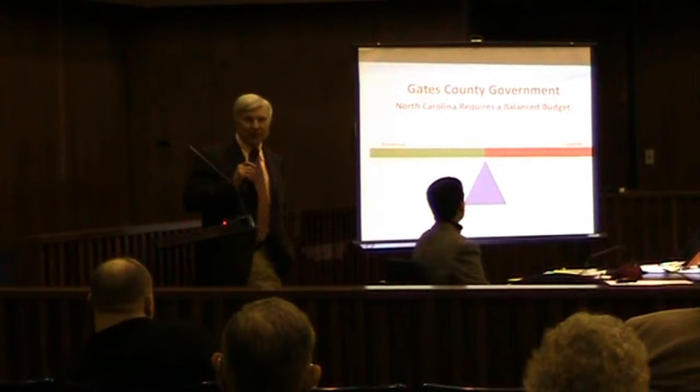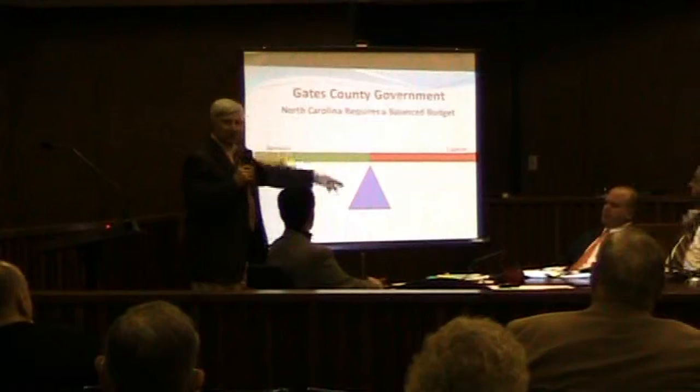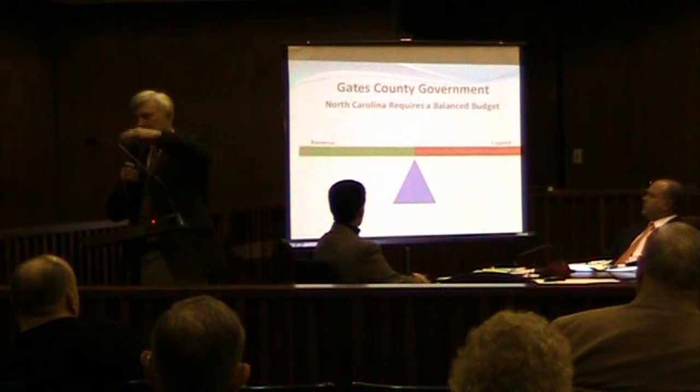The first thing we start off with in county government and state government is you had to have a balanced budget. That's all this is signifying. Revenue is on the left, expense is on the right, on the balanced beam. When you turn this in, it must be at the horizontal level.